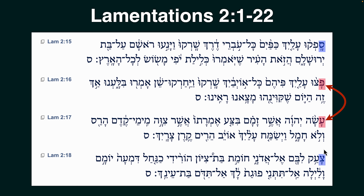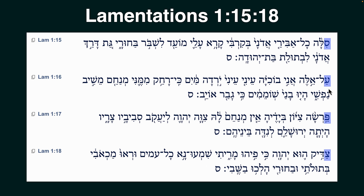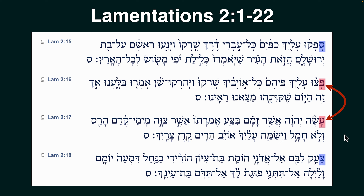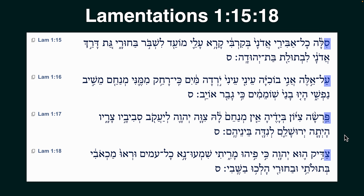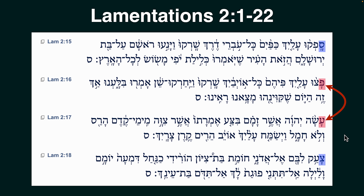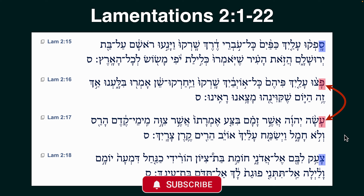Now in the second chapter, the 16th and 17th letters — Ayn and Peh — are interchanged. The order is actually changed. In chapter 1 we see Samek, Ayn, Peh, Tzade, but in the second chapter we have Samek, Peh, Tzade. So why did he change the order? What does he mean by that? Chapter 2 also has 22 letters — the same thing — except he flips Ayn and Peh.